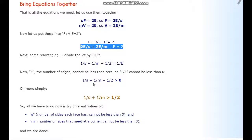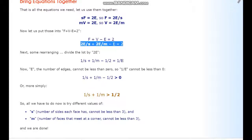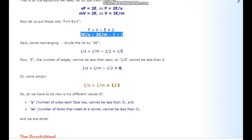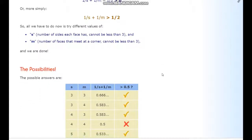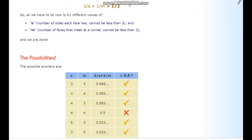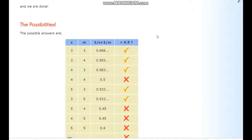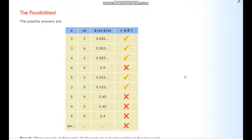Since E is greater than zero for any Platonic solid, one over E is greater than zero. Manipulating the equation and adding one-half to both sides, we arrive at an inequality. It turns out that every pair of values for S and M that satisfies this equation corresponds to exactly one of the five Platonic solids — and we need to verify that all other cases lead to contradictions.